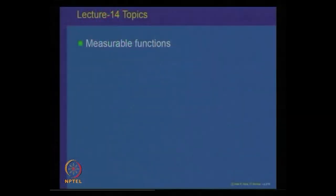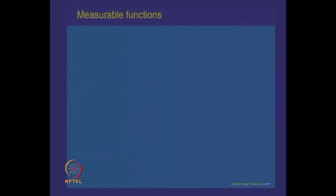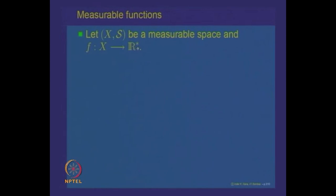Welcome to lecture number 14 on measure and integration. Today we will start looking at functions on measurable spaces. These are called measurable functions. We will assume that we have a measurable space X, S, where X is a set, S is a sigma algebra of subsets of X, and we have a function f defined on X taking extended real values. R star denotes the extended real line — the set of all real numbers together with plus infinity and minus infinity.